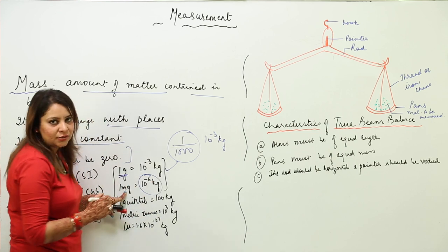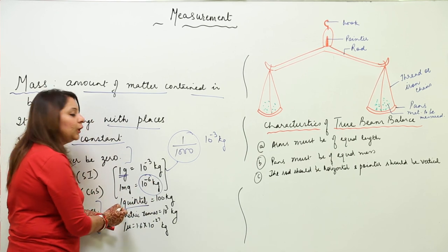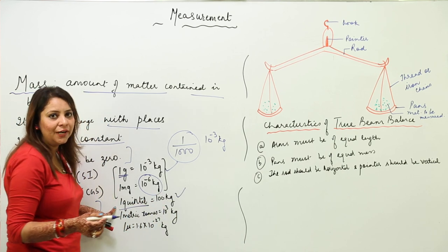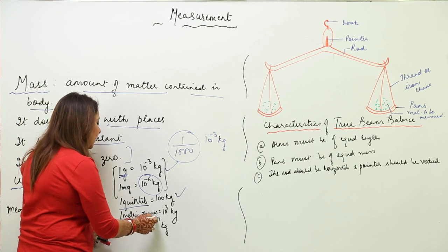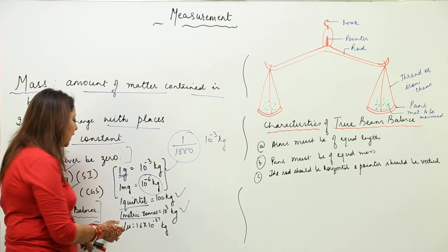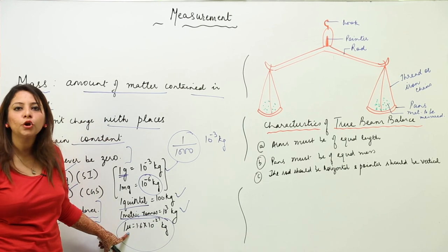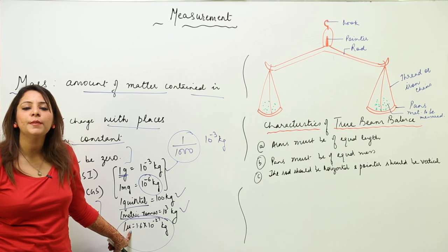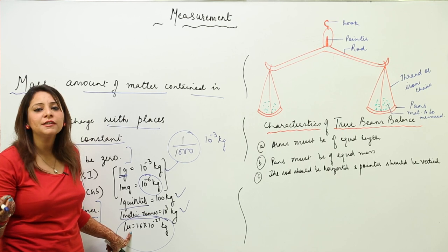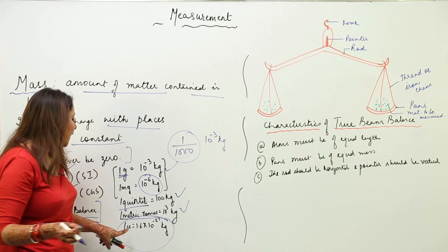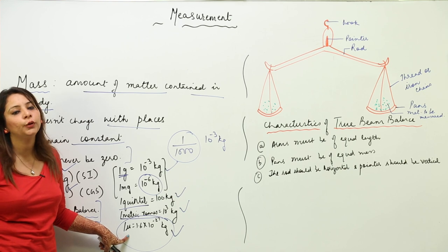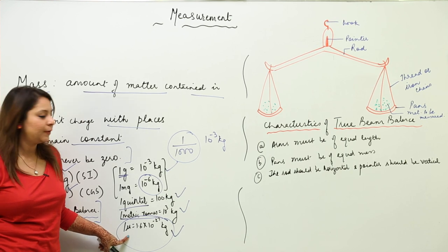We also use the term quintal: 1 quintal equals 100 kg. Another unit is metric ton: 1 metric ton equals 1000 kg. There is also the atomic mass unit (mu), used to measure the mass of fundamental particles like electrons, protons, and neutrons. 1 mu equals 1.6 × 10⁻²⁷ kg — a very small fraction of a kg.